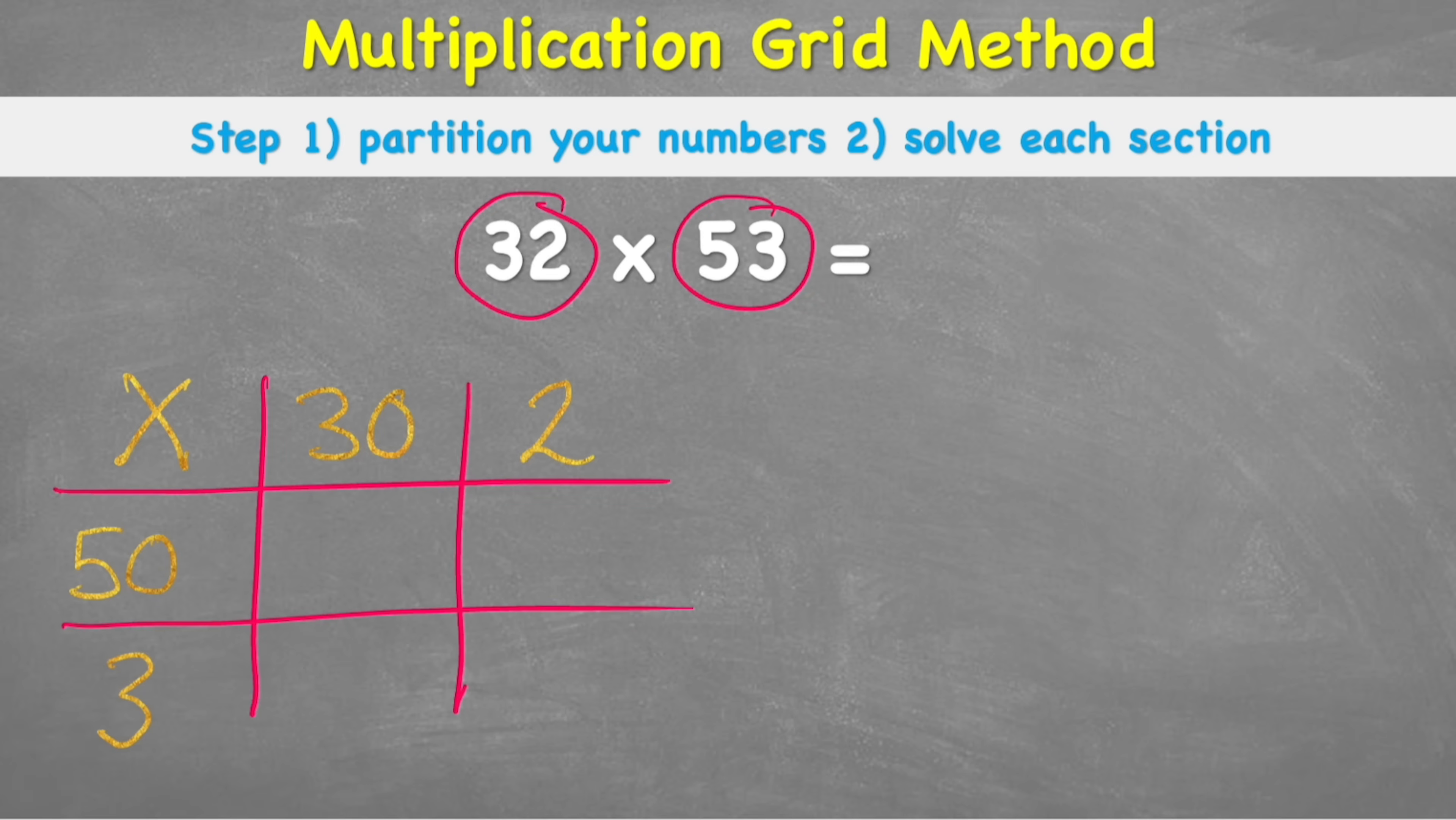Now all we need to think is that this box here is the product of 30 times 50. Then this second box over here is the product of 2 multiplied by 50. Then our third box down here is 3 multiplied by 30. And then the last one, 3 multiplied by 2.